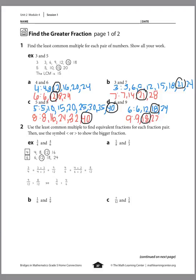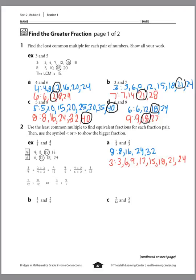First step: we're listing out the multiples of 8 and 3 to find the least common denominator. Multiples of 8: 8, 16, 24, 32. For 3: 3, 6, 9, 12, 15, 18, 21, 24. So our least common multiple is 24. Now we're going to change 5/8 to an equivalent fraction with 24 as the denominator. We multiply both top and bottom by 3, because 8×3=24, so we get 15/24.